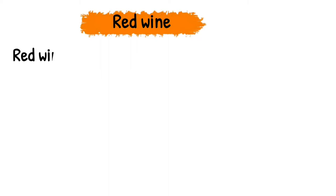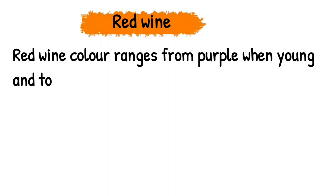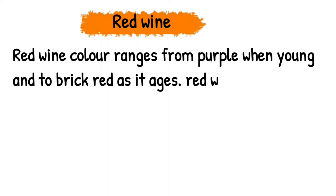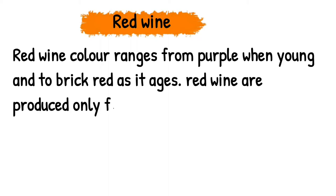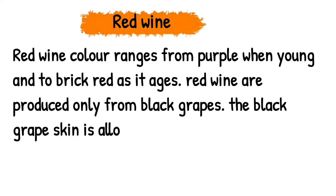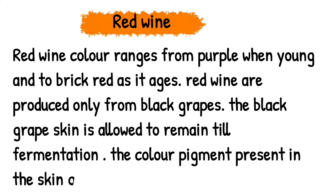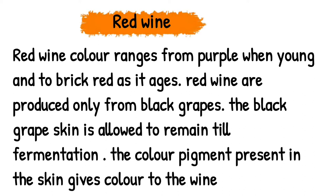Red wine: Red wine color ranges from purple when young to brick red as it ages. Red wines are produced only from black grapes. The black grape skin is allowed to remain until fermentation, and the color pigment present in the skin gives color to the wine.